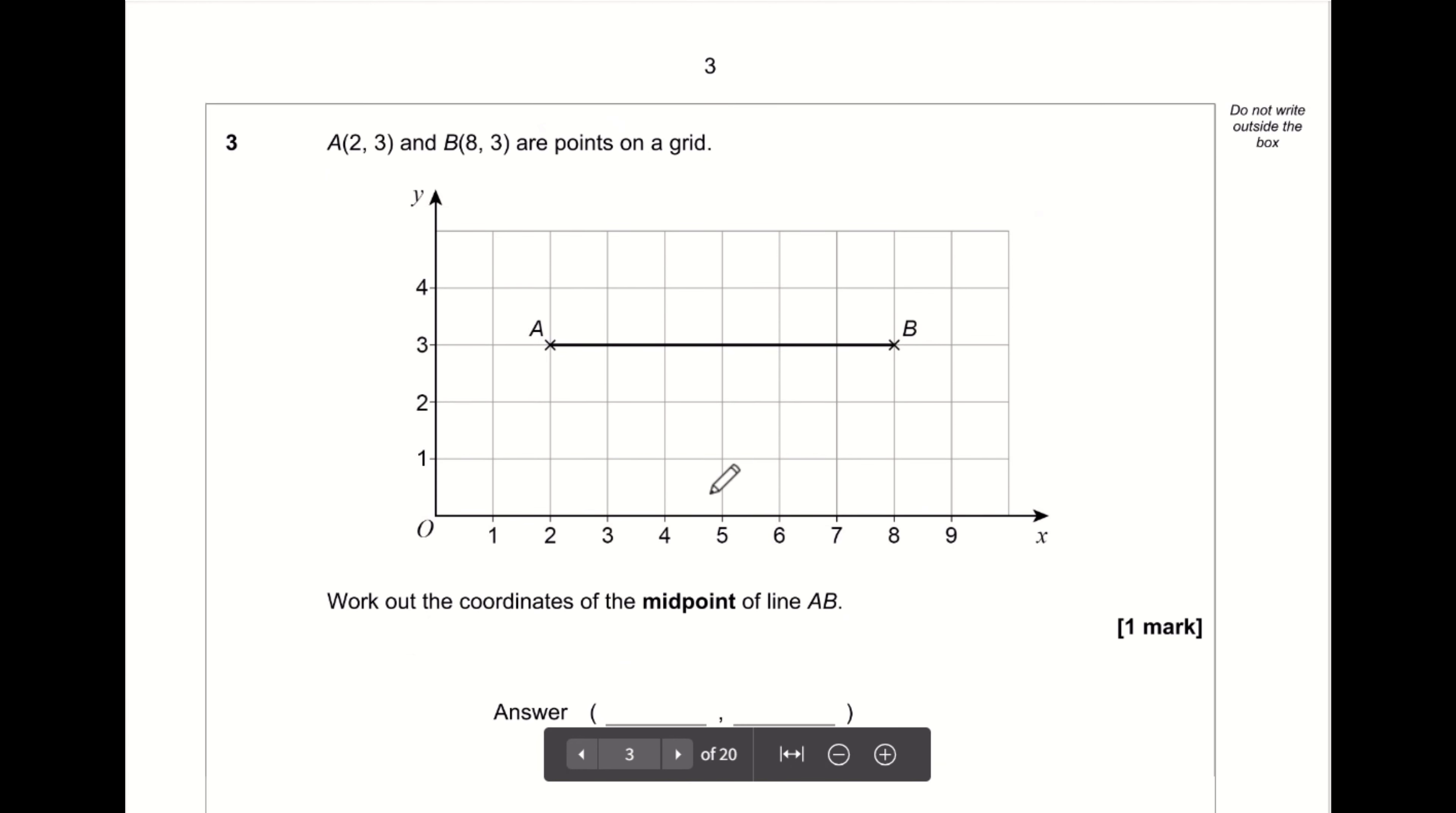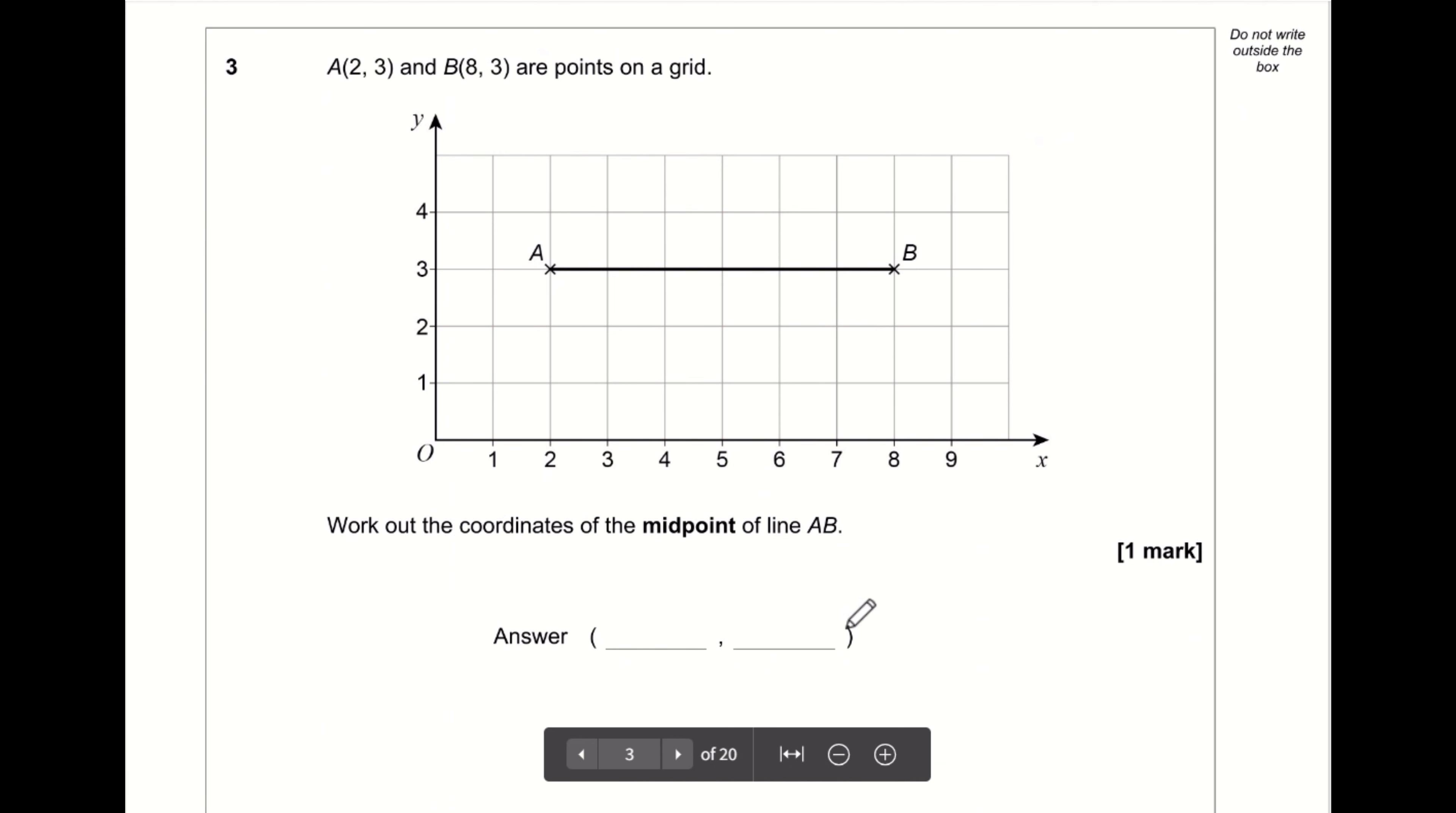Let's move on now to question three. We want to find the coordinates of the midpoint. As it's a horizontal line, this question is really not that bad. Let's just measure the line. It's 1, 2, 3, 4, 5, 6. So 6 divided by 2 is 3. So the midpoint is going to be three across: 1, 2, 3. Remember with coordinates, we go along the corridor and up the stairs. So it's 5, 3, not 3, 5.